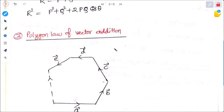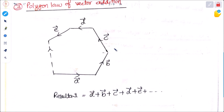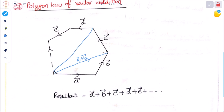Next is the polygon law of vector addition. A polygon is a structure which has n number of sides. If there are n sides represented by vectors A, B, C, D, E, then the last side taken in the opposite direction gives the sum of all these vectors. Applying the triangle law step by step, the resultant becomes A plus B plus C plus D plus E.